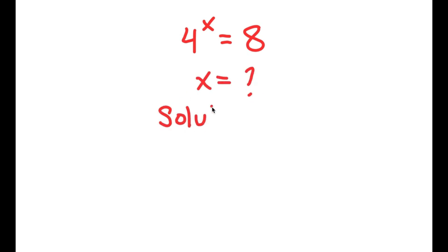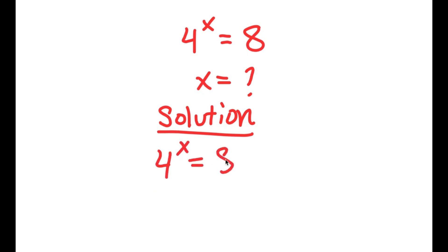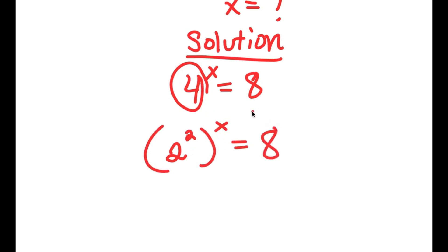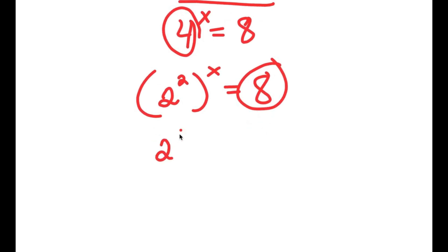For my solution, I start by rewriting the problem. I replace 4 with 2 squared, giving me 2 squared to the power of x. And I replace 8 with 2 to the power of 3. So I have 2 squared to the power of x is equal to 2 to the power of 3.